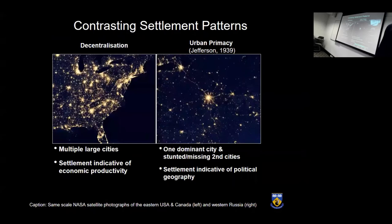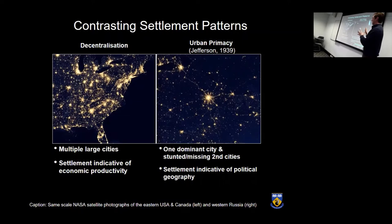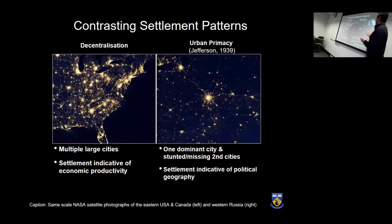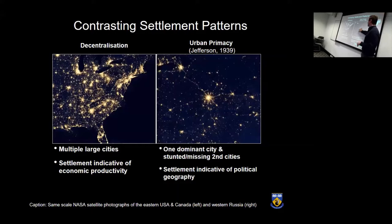To get started, we're going to look at a settlement pattern called urban primacy. In this image I have two contrasting settlement patterns. On the left you have decentralized urbanization — these are same-scale images — with multiple large cities, as seen in Canada and the United States, indicative of economic productivity. On the right, this is western Russia, a good case of urban primacy: one dominantly large city with an observable absence of second cities. This settlement pattern is usually indicative of political geography — almost every time you see it, that dominant city will be the political capital.